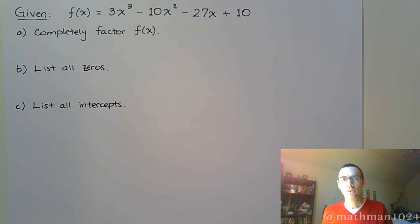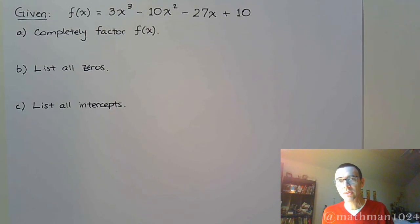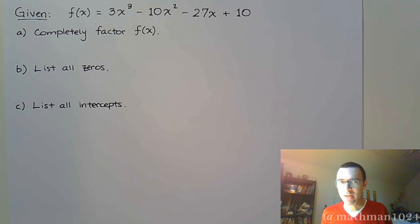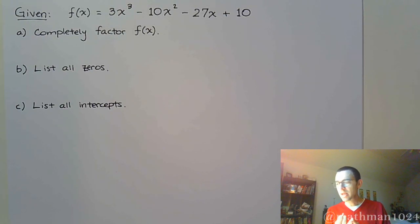We have another example of a polynomial function. We have f(x) = 3x³ - 10x² - 27x + 10, and we need to completely factor the function, find all the zeros, and list all the intercepts.